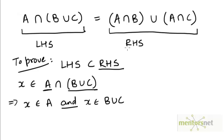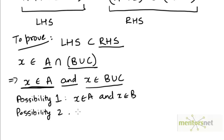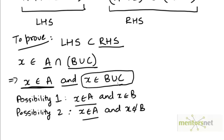Our goal is to show that x belongs to the set on the right hand side — that either x belongs to A intersection B or it belongs to A intersection C. We already know that x belongs to A, and the other piece of information is that x belongs to B union C. So possibility 1 is that x belongs to A and x belongs to B. Possibility 2 is that x belongs to A and x does not belong to B. We divide this into two possibilities: either x belongs to B or it does not.